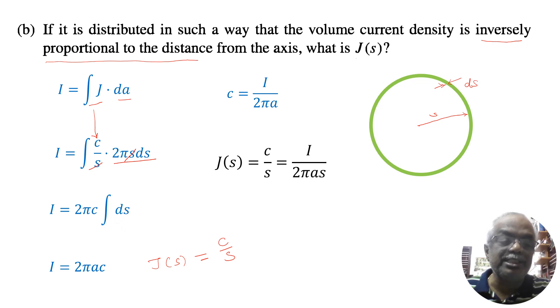Integrate dS with respect to 0 to A. Because the radius of the circle is A. So if you integrate you will get S. So if you apply upper limit A, lower limit will be 0. So this will be A. So I have taken 2πA. Here you have C. 2πAC. Then what is C? C is equal to I over 2πA.